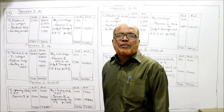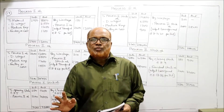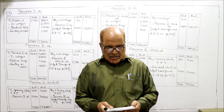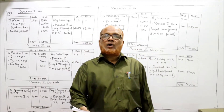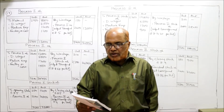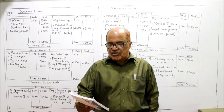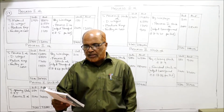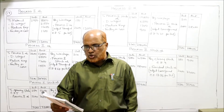Now we will start the next problem on process costing, that is problem number 17. These last two problems are entirely different — here we have the stock in process accounts. The information given below is extracted from the cost accounts of a factory producing a commodity in the manufacture of which three processes are involved. Prepare process cost accounts showing the cost of output and the cost per unit at each stage of manufacture.